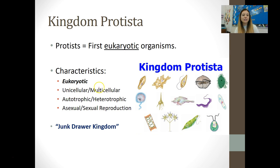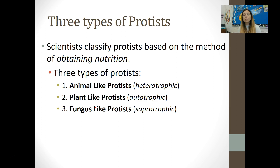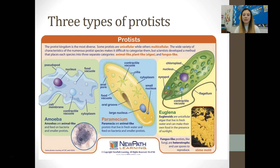Some protists are unicellular, some are multicellular. Some protists are autotrophic — they photosynthesize and make their own food. Some protists are heterotrophic — they have to consume other things. Some reproduce asexually and some reproduce sexually. Scientists classify protists based on how they obtain their nutrition. There are three categories: animal-like protists, plant-like protists, and fungus-like protists. Animal-like protists are heterotrophic. Plant-like protists are autotrophic. Fungus-like protists are saprotrophic, meaning they're decomposers.